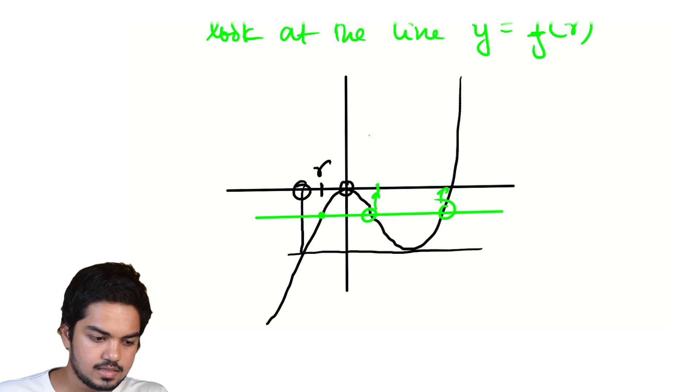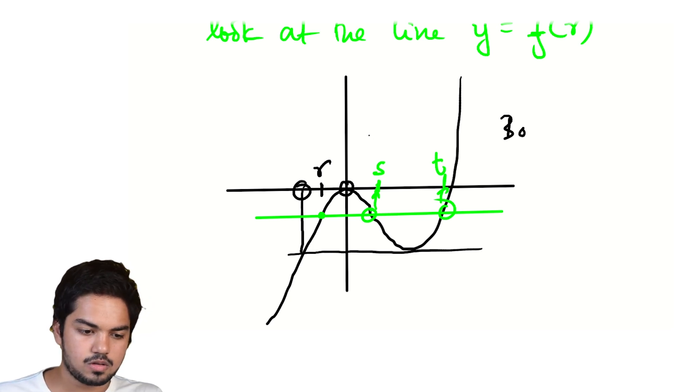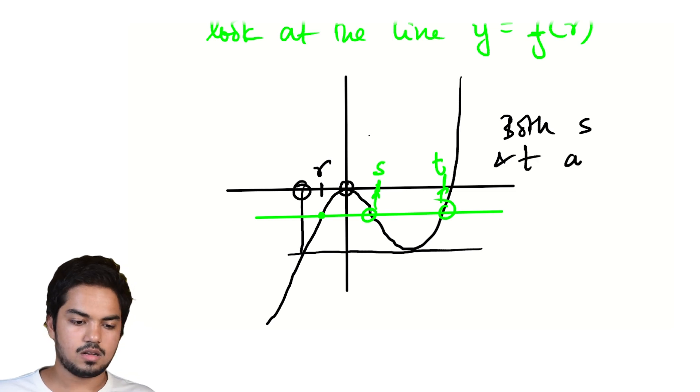I know for sure that this point and this point, so this number and this number, I say S and T, both S and T will be rational. Why is that?